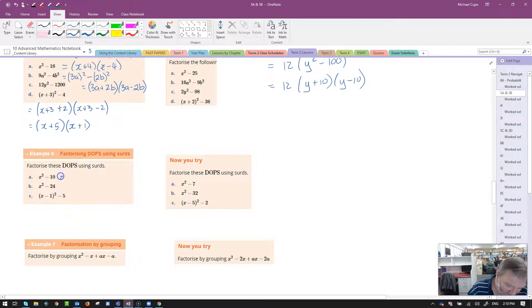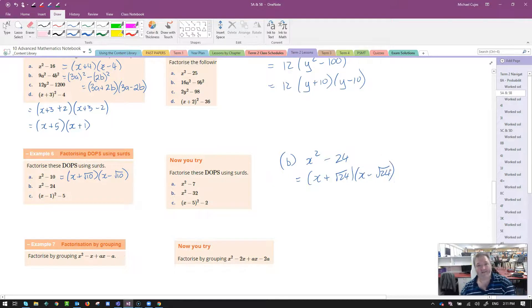Sometimes we have to use surds. 10 is the same as root 10 squared. So this could just be x plus root 10 times x minus root 10. Sometimes you need to be careful. You may need to simplify. I'm going to do b over on the side here. X squared minus 24. I can definitely say that's the same as x plus root 24 times x minus root 24. But being fantastic year 10 students, you wouldn't be rude and leave your answer with a non-simplified surd. You would simplify that root 24. Remember, it's root 4 by root 6. Square root of 4 is 2. So this is going to be x plus 2 root 6 times x minus 2 root 6.